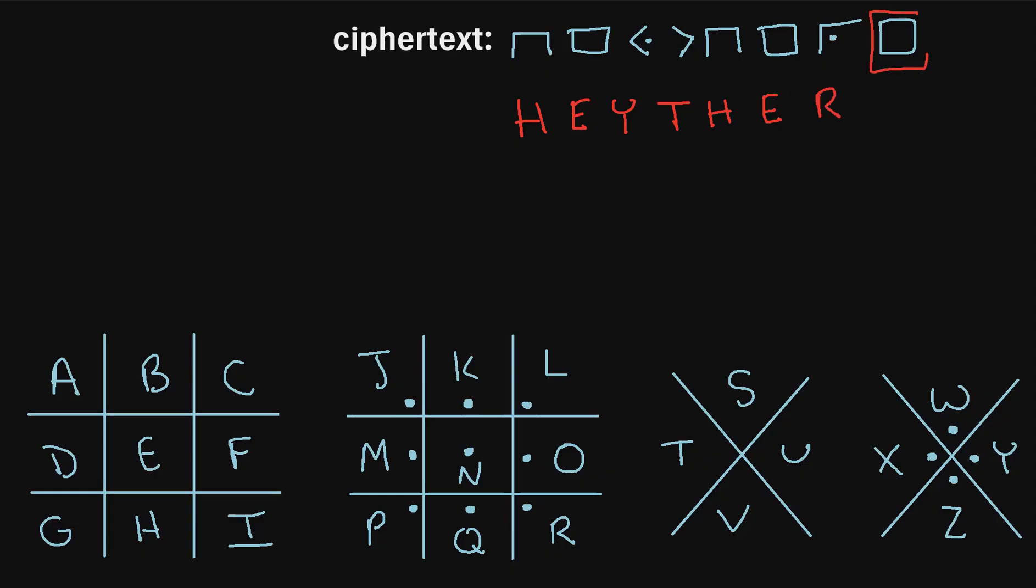And then lastly, we have another box, which we already know is an E. So our plain text is, hey there. So those were just a couple quick examples of how to encrypt and decrypt text using the Pigpen cipher.